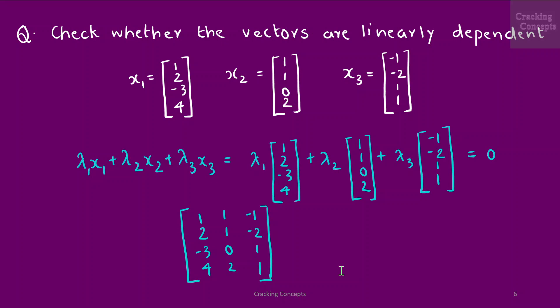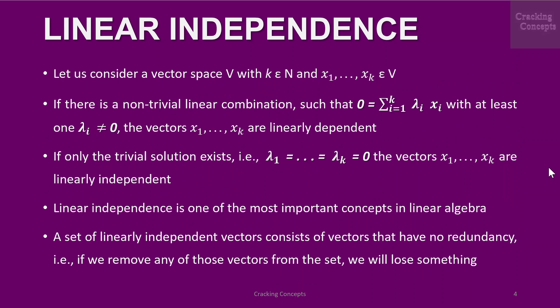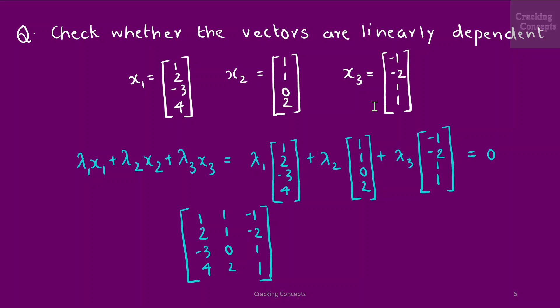Now we'll see a problem where we are given three vectors and asked to check whether the vectors are linearly dependent. We follow the general approach and solve for lambda_1*x1 + lambda_2*x2 + lambda_3*x3 = 0, based on the equation discussed in the previous slide. We substitute the values of x1, x2, and x3 with the corresponding vectors, then write the vectors as columns of a matrix and apply elementary transformations until we identify the pivot columns.